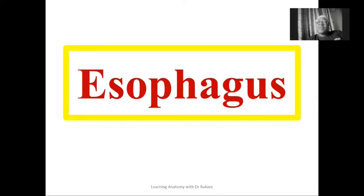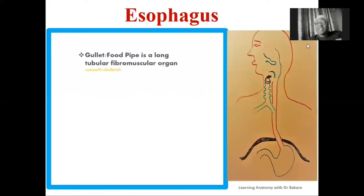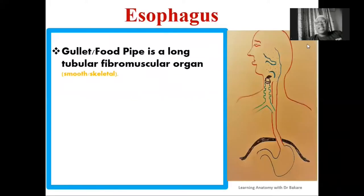Welcome. This is where we simplify anatomy, and here we also learn anatomy with so much fun. Ride on with me as I unfold the anatomy of the oesophagus. The oesophagus is also referred to as the gullet or the food pipe, which literally means a pipe that carries food. It is a long tubular organ.